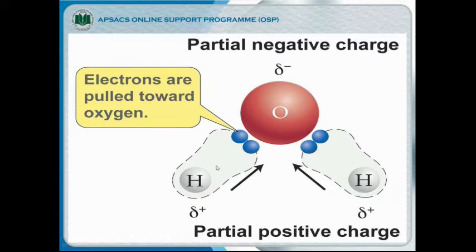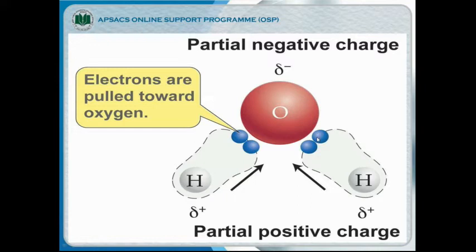In the water molecule, the shared electrons of hydrogen are more attracted by oxygen than by hydrogen. Because oxygen is larger than hydrogen, the orbital of hydrogen is smaller compared to oxygen. So if a shared electron revolves around the outermost shell of oxygen and hydrogen, hydrogen takes less time than oxygen. Therefore, hydrogen becomes partially positive and oxygen becomes partially negative, with electrons pulled towards oxygen.